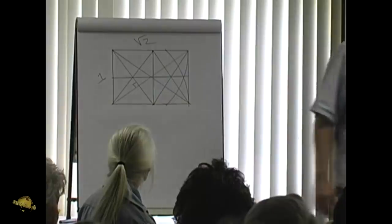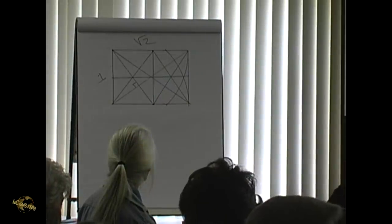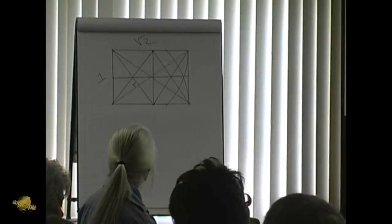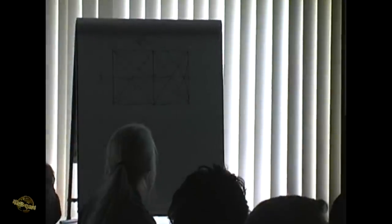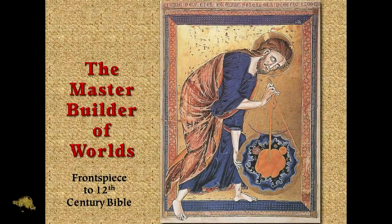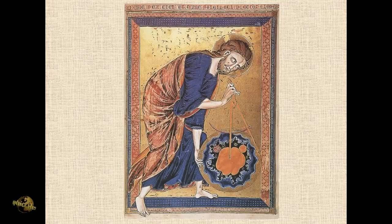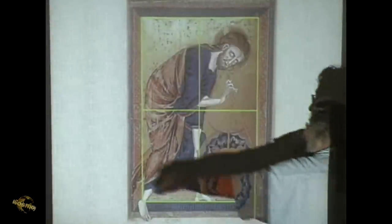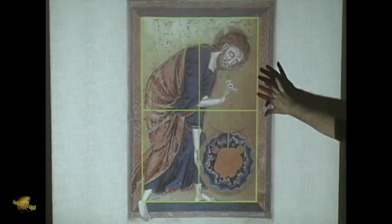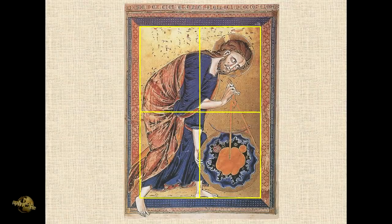This particular rectangle was used frequently in ancient art and architecture, over and over again very redundantly. One example of it here is this image — the frontpiece to that medieval Bible. There is the root two rectangle superimposed over it, showing how the root two rectangle creates a framing grid, and the whole composition is within that root two rectangle.